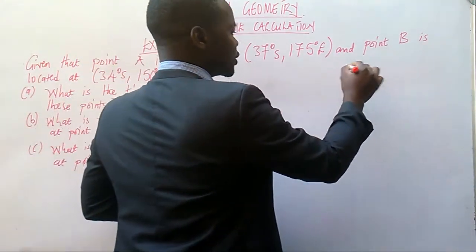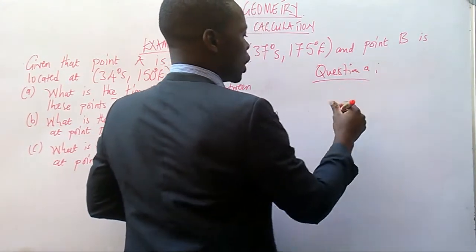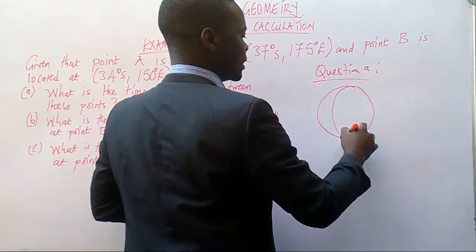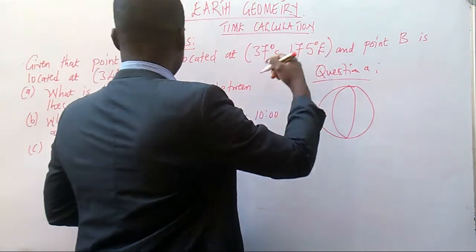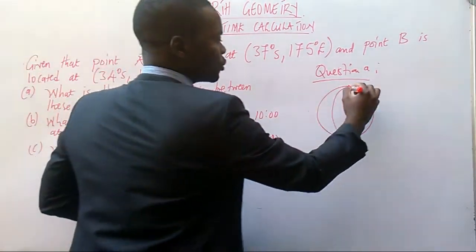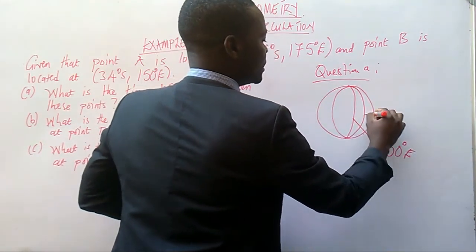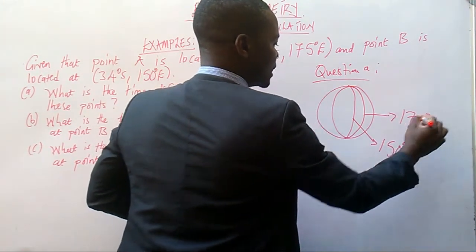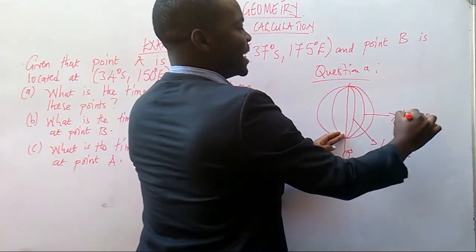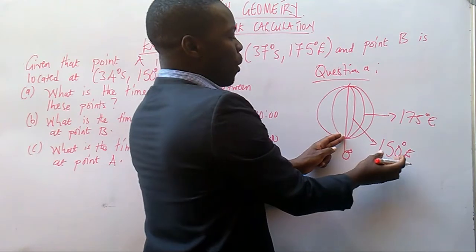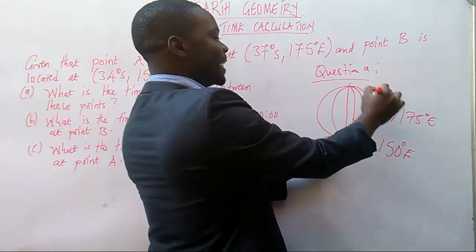I will draw a sketch of our globe, which is like this. From there, we have got 175 degrees east and 150 degrees east. This means that this can be 150 degrees east and this can be 175 degrees east. Because remember that this is zero degrees — as you go east, the numbers are increasing. Since 150 is smaller than 175, then 150 will come first and then 175 second.